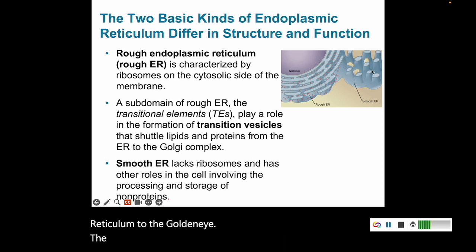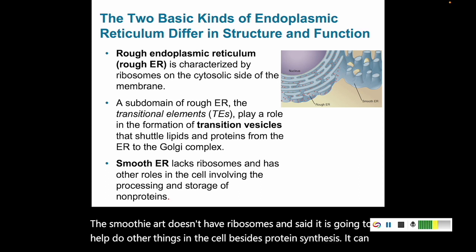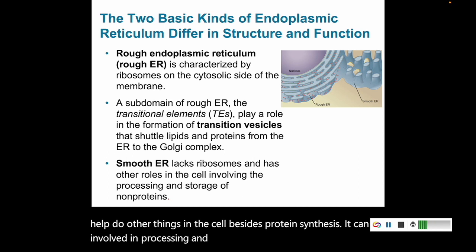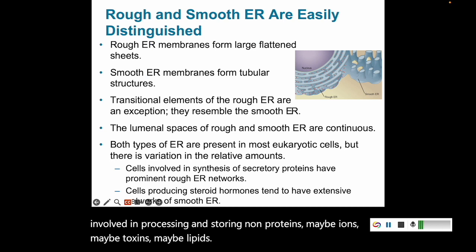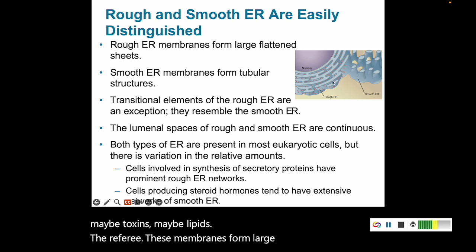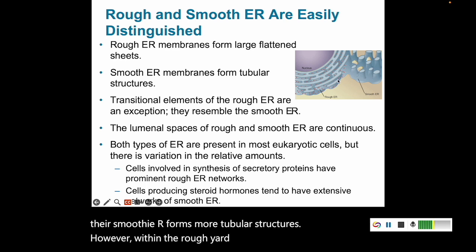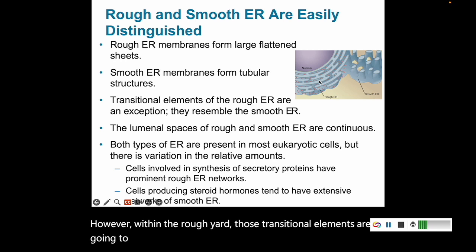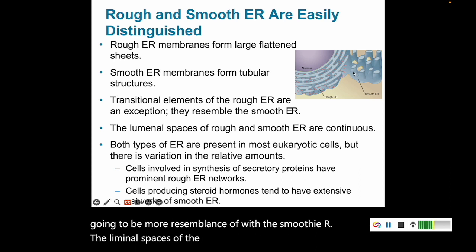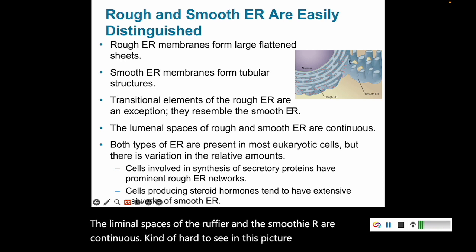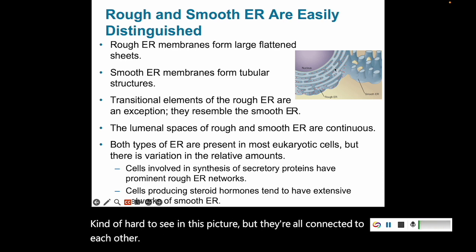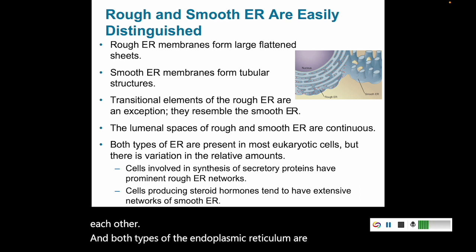The smooth ER doesn't have ribosomes. Instead, it helps do other things in the cell besides protein synthesis — it can be involved in processing and storing non-proteins, such as ions, toxins, or lipids. The rough ER membranes form large flattened sheets, while the smooth ER forms more tubular structures. The luminal spaces of the rough ER and smooth ER are continuous, and both types are present in most eukaryotic cells.